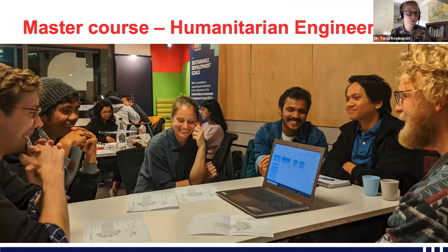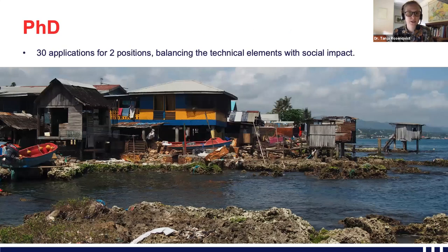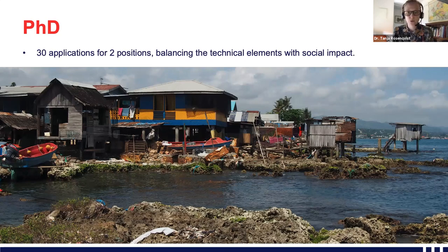We also have a dedicated humanitarian engineering master's course. In summary, the entire program serves somewhere between 1,000 and 1,100 first-year students focused on increasing motivation; the Humanitarian Experiential Learning Project increases capability; and capstone and final thesis are really about having impact and creating change in the real world. We recently got more than 30 applications for two PhD positions, showing growing interest not just at undergraduate and master's level, but also at PhD level in humanitarian engineering.